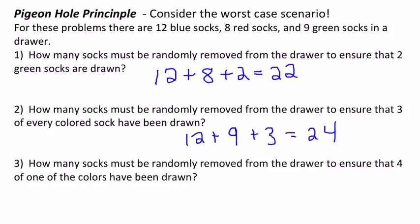Well, the worst case scenario would be drawing three blue, three red, and three green. We could draw nine socks without being sure that we've got four of any of them. Then once we do that, we just have to draw one more sock, and that sock has to match one of our groups of three. So that means we have to draw ten socks.